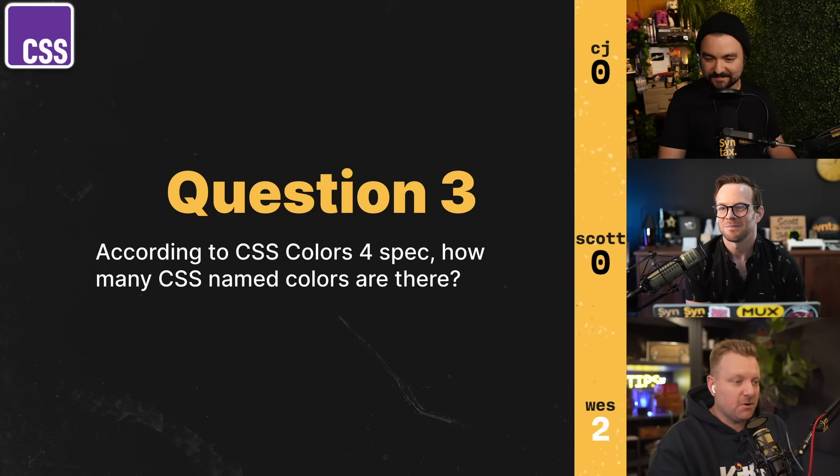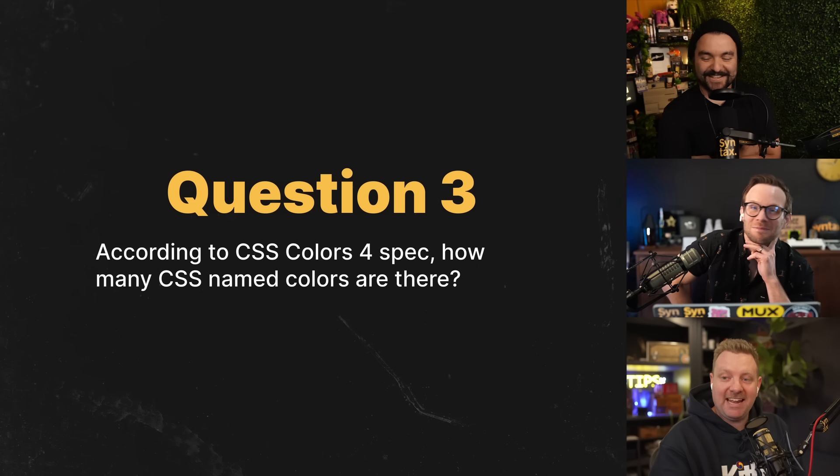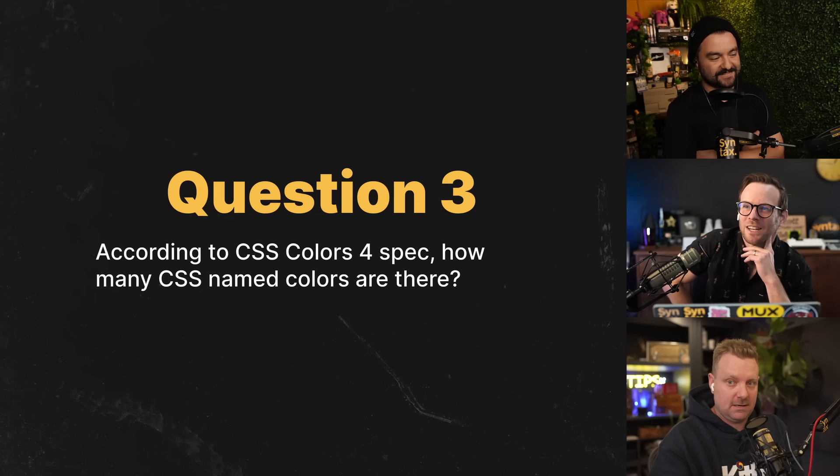According to the CSS Color 4 specification, how many named CSS colors are there? Guesses: 124 — incorrect. 200 — wrong. There are 148. There were 147, but in CSS Color 4 they added Rebecca Purple, bringing it to 148.